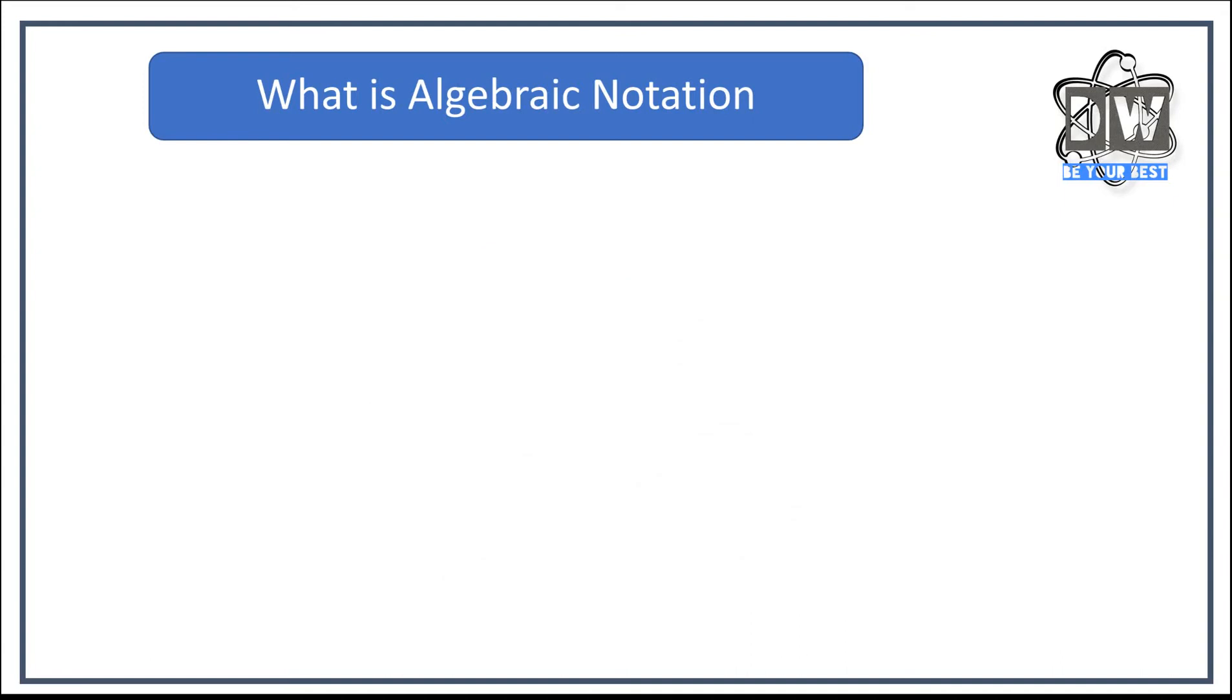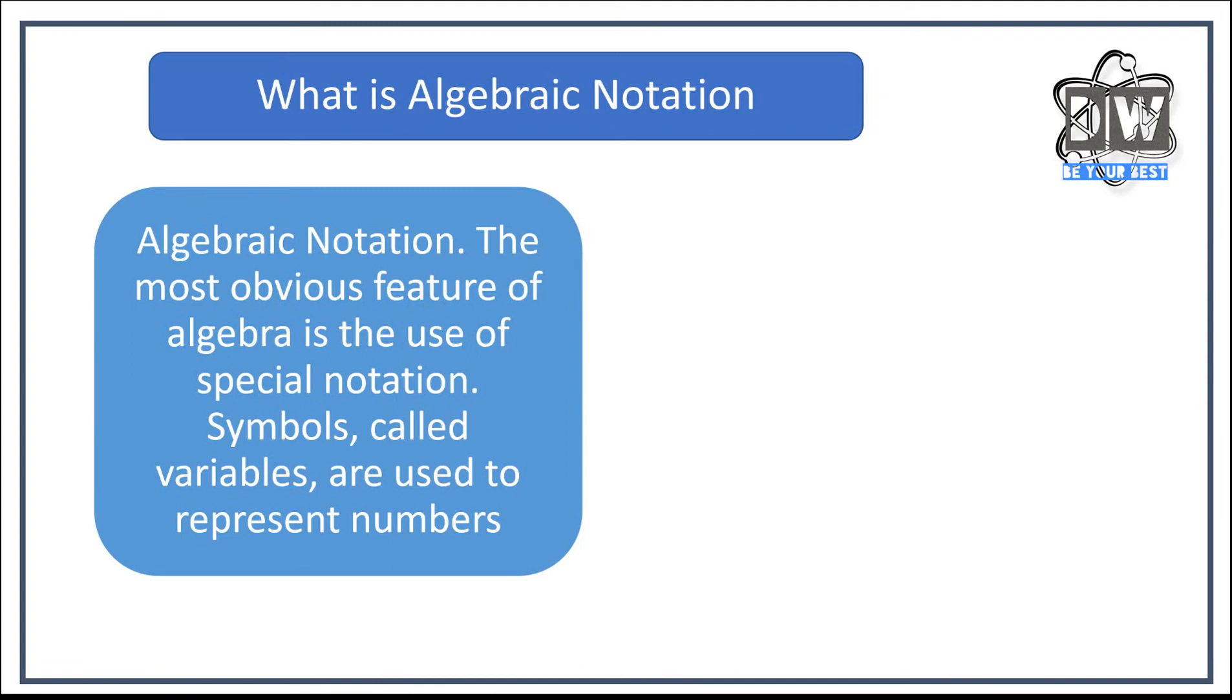So what is algebraic notation? The most obvious feature of algebra is the use of special notation. Symbols called variables are used to represent numbers. Algebra - lots of kids that I teach go 'oh my, I can't do algebra.' Well, when we think about it and what it is, is that letters are there to represent numbers that we haven't quite worked out yet or we don't know yet or that change, hence the word variables.